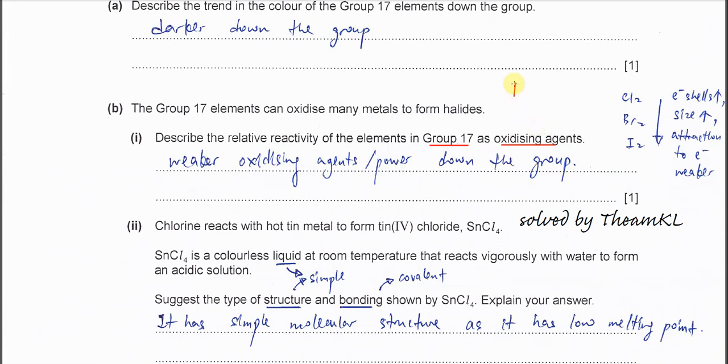For example, if chlorine reacts with sodium, sodium will release one electron to form sodium ion. The electrons will be gained by the chlorine and later it forms chloride. The sodium now is oxidized to sodium ion from zero to positive one. All these Group 17 elements are able to gain electrons from others and at the same time oxidize others.